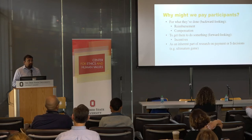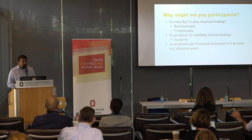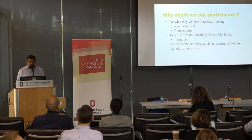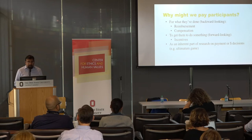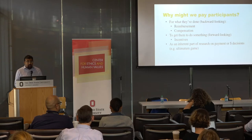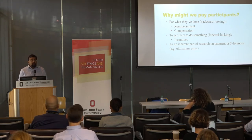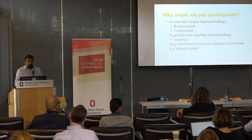Two are what I call backward-looking: we're paying them because we think it's appropriate given what they've done. We might pay people by way of reimbursement — for expenses they undertook to be in the study — or by way of compensation, giving them money for time, effort, or sacrifice. You might also pay them in a forward-looking way to get them to do something — offering an incentive payment to encourage enrollment in a clinical trial. The last category, less common, is paying people as an inherent part of the experiment itself, such as in social science research on something like the ultimatum game where participants actually divide up a sum of money.